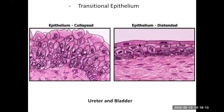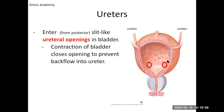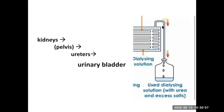The ureters descend and enter the back of the bladder through ureteral openings. They fill the bladder with urine from there. When the bladder contracts, those openings close to prevent backflow. That's the ureter — just a tube going from the kidney down to the bladder.